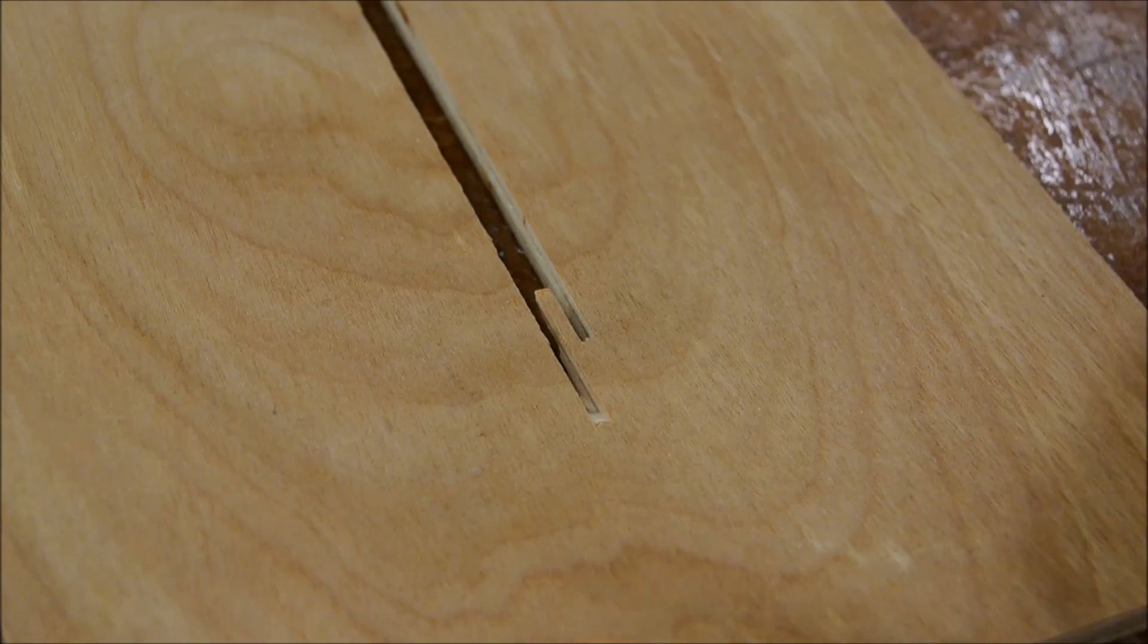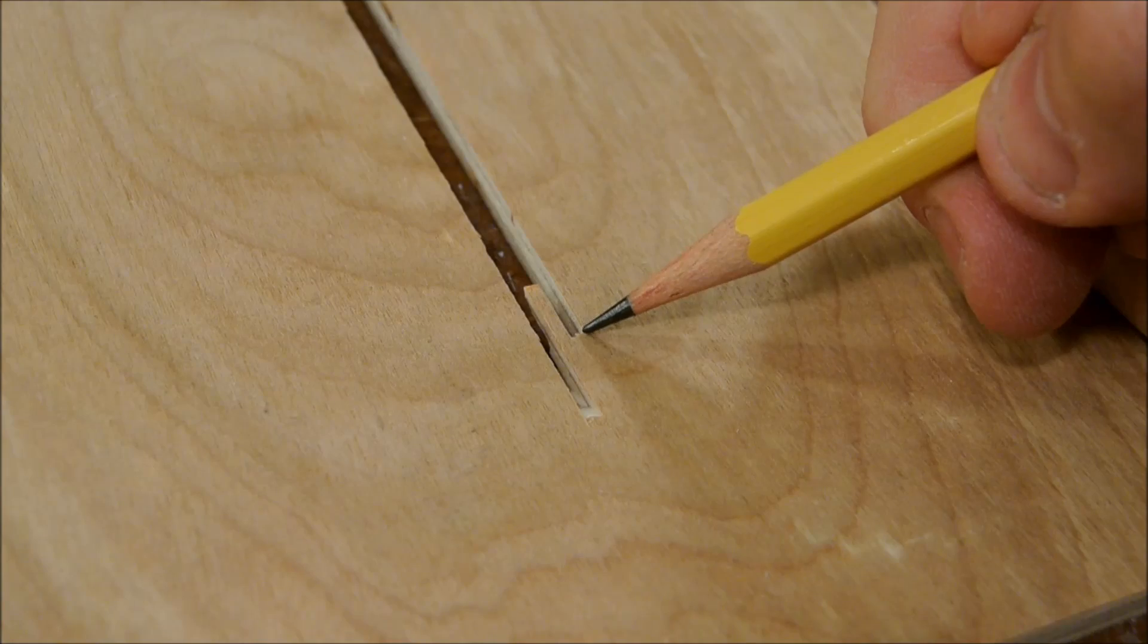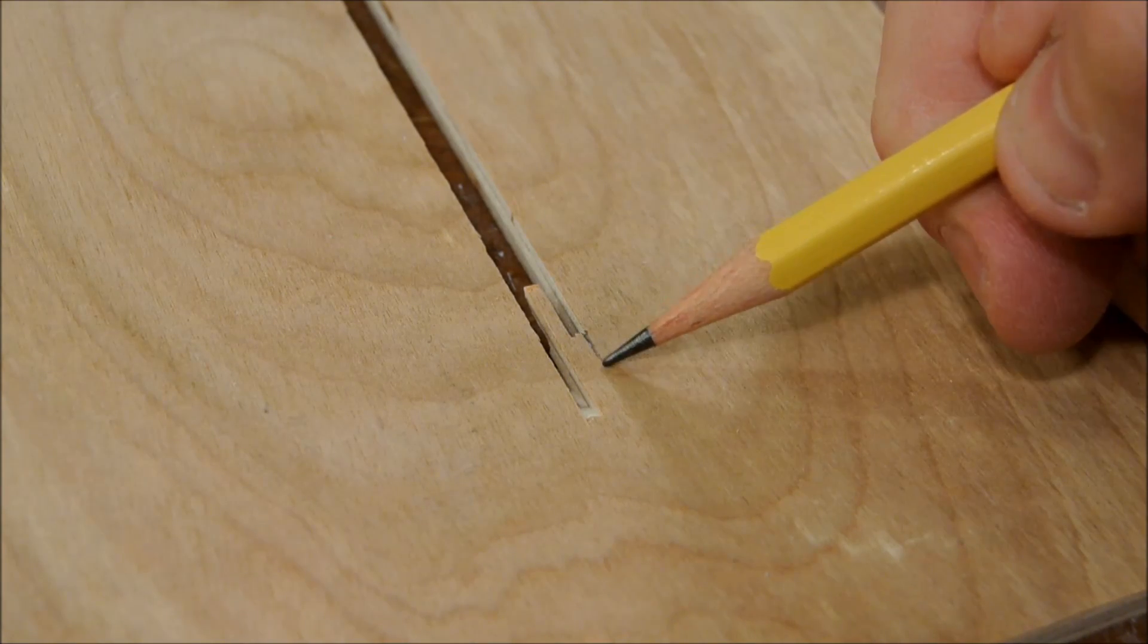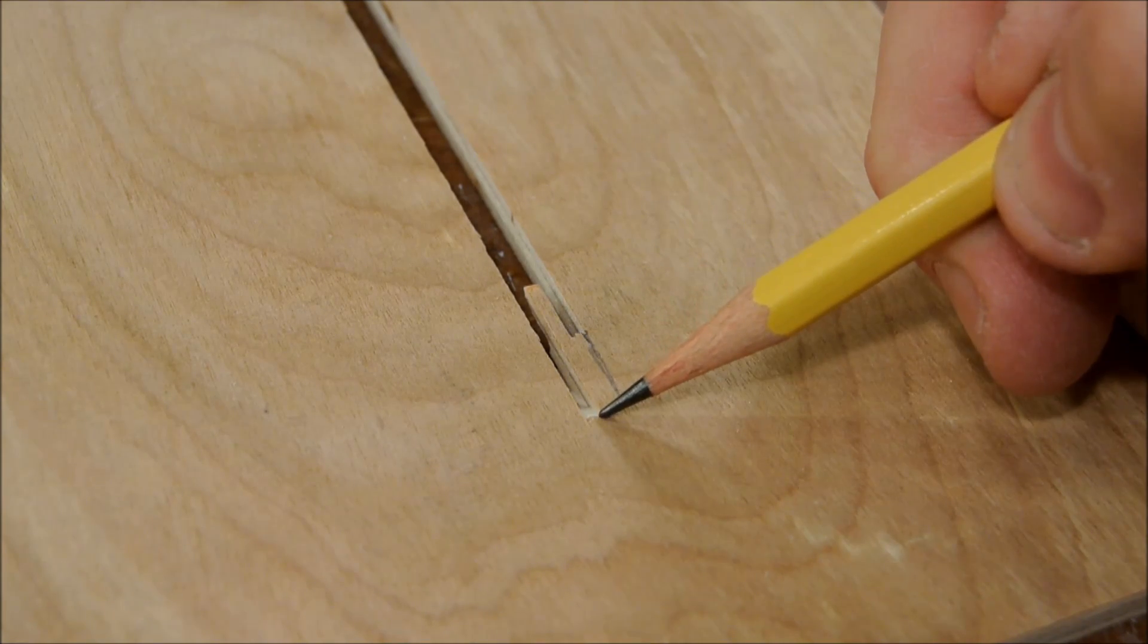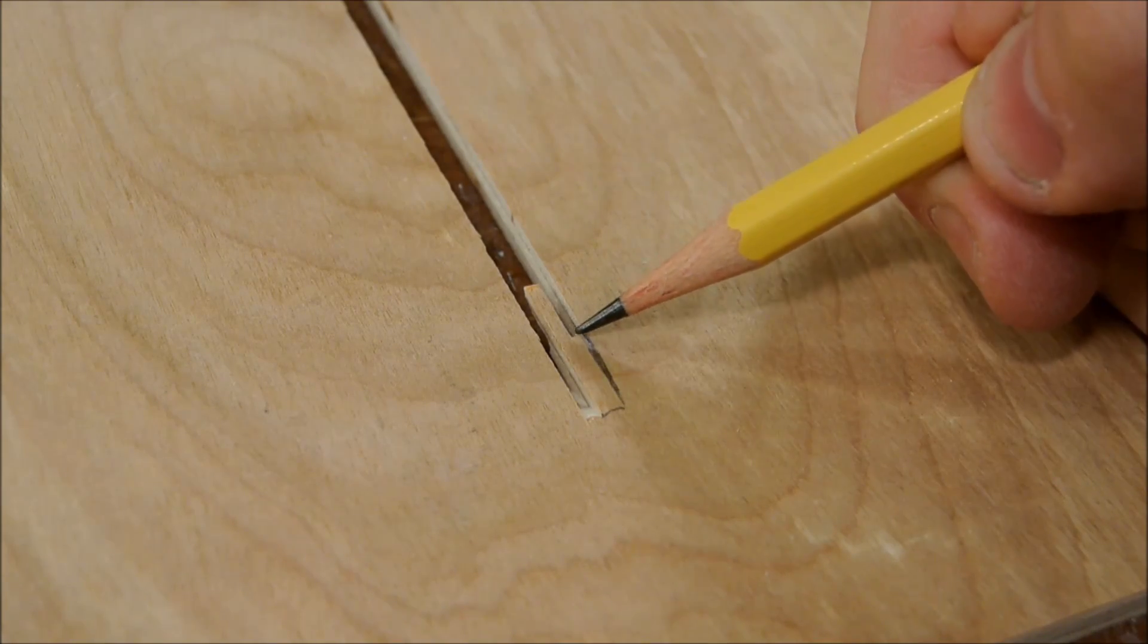If you're still a beginner with a table saw, you may never have encountered this problem before. A saw blade is round, and so it cuts deeper underneath than it does at the top. For that reason, we still have to remove this little piece here.